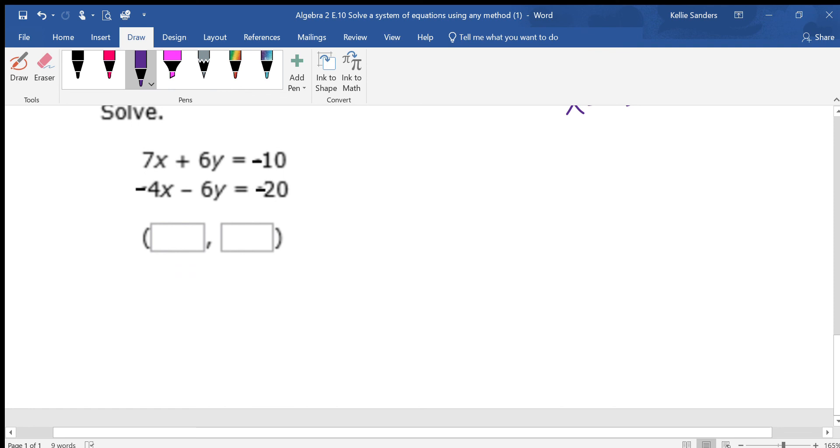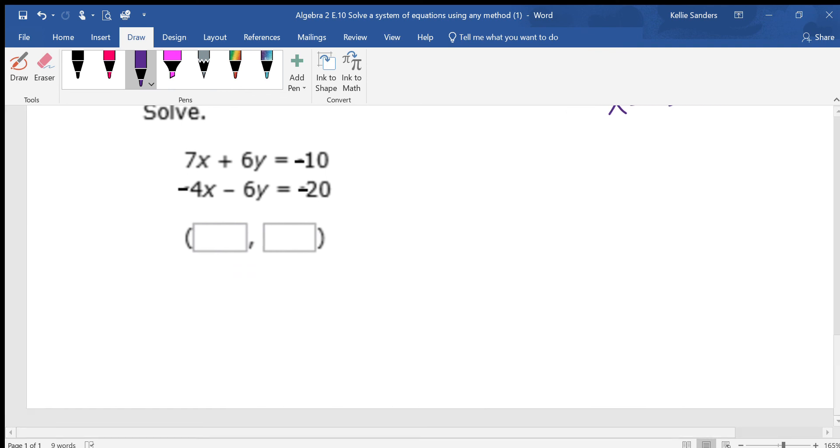Well, I lost this one. Because it is already set up. See the 6's? One's positive. One's negative. So those are being cancelled. 7 minus 4 is 3. Negative 10 and negative 20. Negative 30.